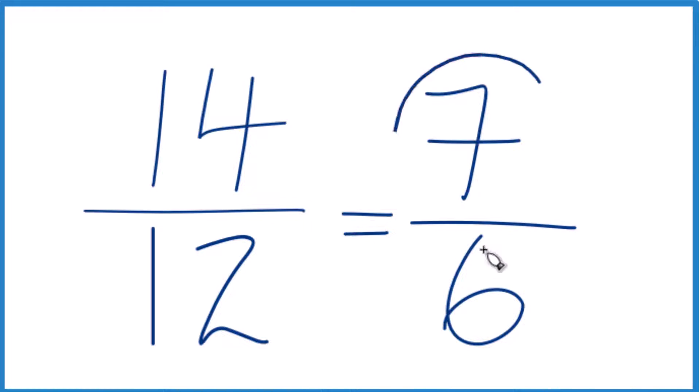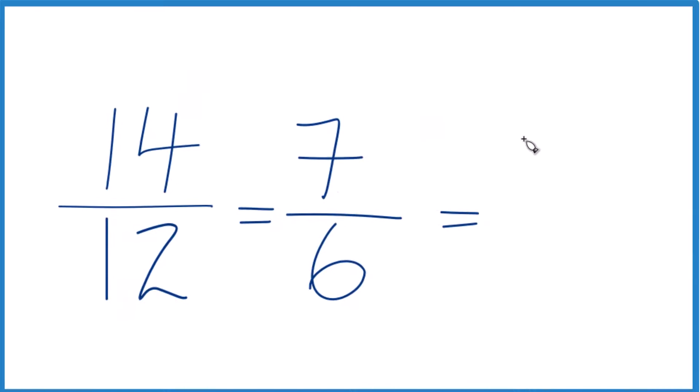But because the numerator is larger than the denominator, we could write this as a mixed number. We could say 6 goes into 7 one time. 1 times 6 is 6. Then we'd have the 1 left over. That's our remainder. That's the numerator. We just bring the denominator across.